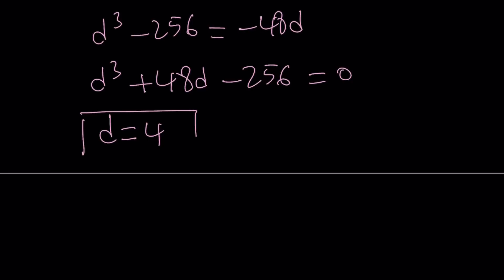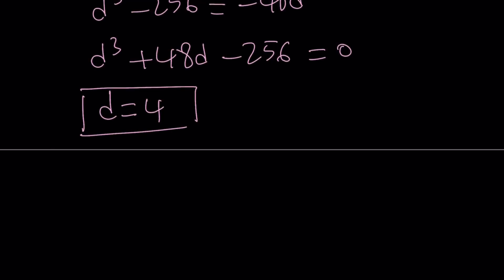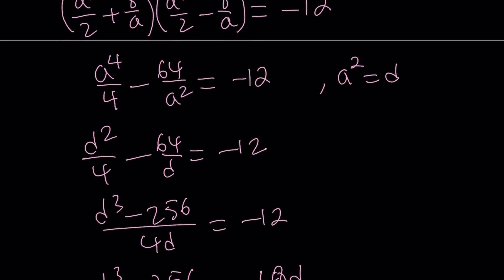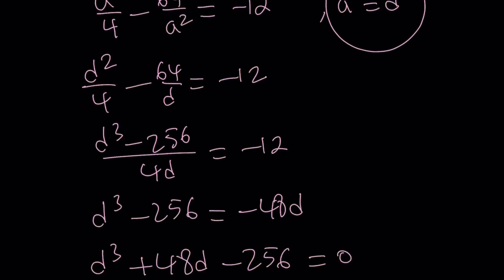So d equals 4 satisfies this equation. Let's backtrack. We said that a squared is equal to d, so that gives us a squared equals 4, so a is 2 or negative 2. But trust me, it doesn't matter which value you use. At the end, you're going to get the same factors. You can definitely test it for yourself. So I'm just going to go with a equals 2.